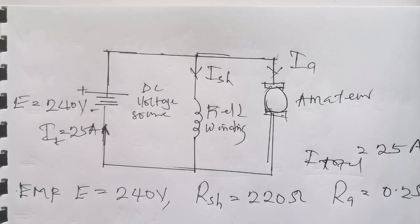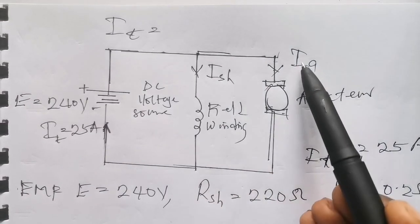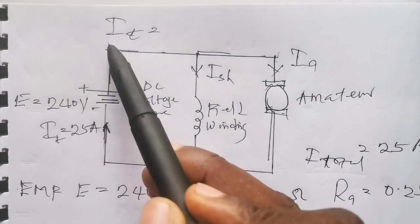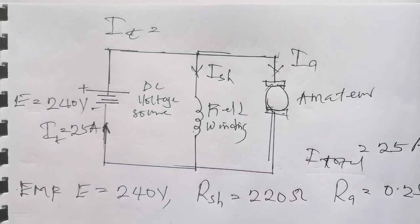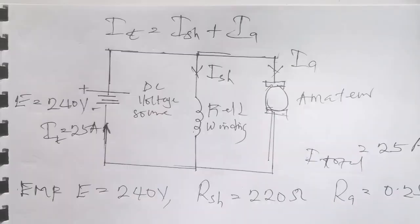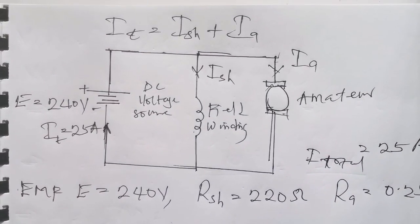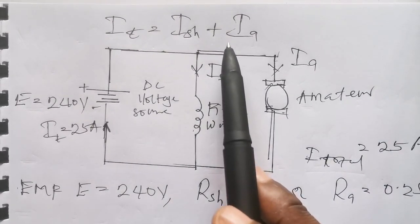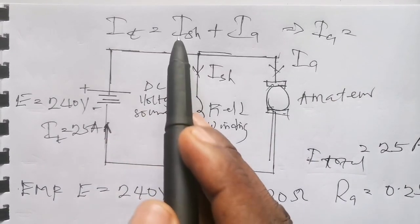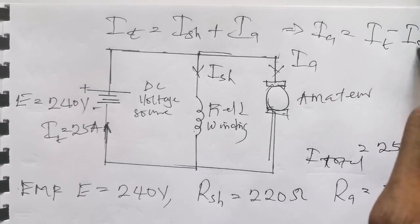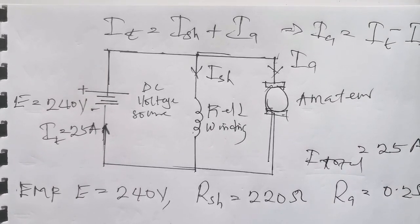This means that the total current IT is equal to the sum of the shunt current and the armature current, because the total current flows through the source, then at the node it branches into the field winding and into the armature. So IT = Ish + Ia. We are asked to find the armature current, so Ia = IT − Ish, which means we need to find the value of the shunt field current.